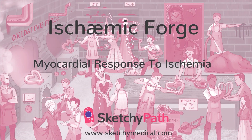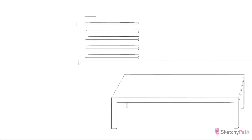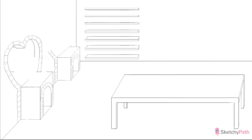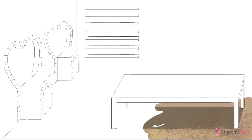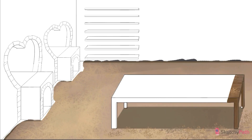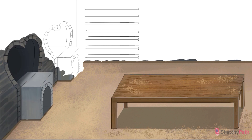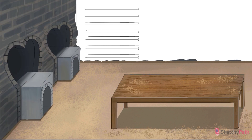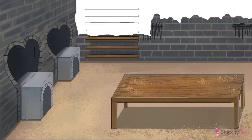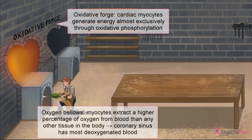Ischemic heart disease is a pretty broad term that encompasses a range of syndromes, both acute and chronic. There's going to be one uniting theme throughout this chapter though: a mismatch between myocardial oxygen demand and coronary oxygen supply.